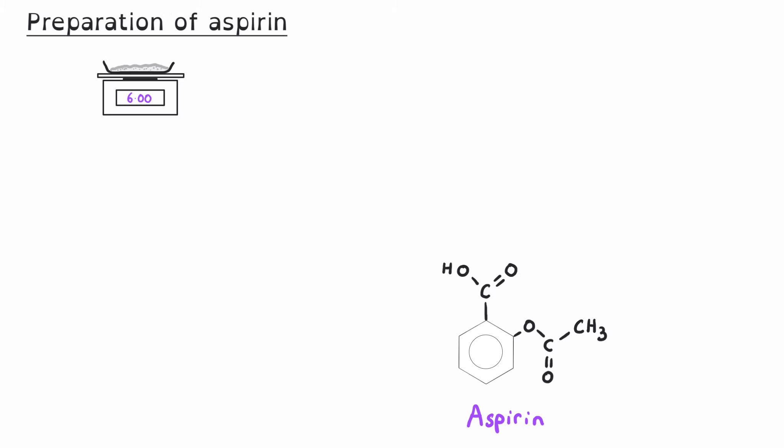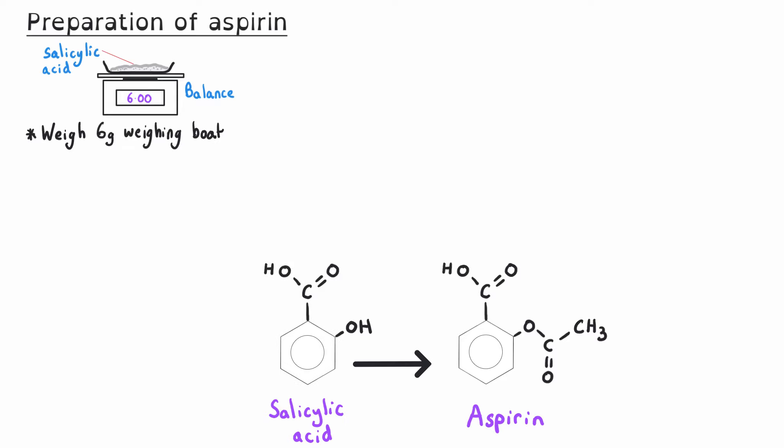You need to know how to describe and explain the steps involved in the preparation of an organic solid. The most common focus of an exam question about this is the preparation of aspirin. We start with salicylic acid, so the first stage is to weigh out the correct amount using a balance and a weighing boat — for example, 6 grams of salicylic acid. We then transfer this solid into a conical flask, possibly through a funnel.